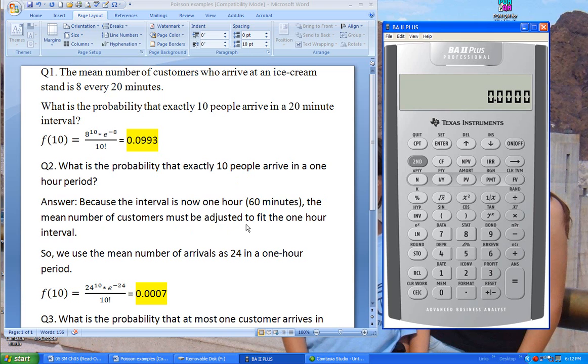So we use the mean number of arrivals to be 24 in a one hour period and then we go through the same calculation because we want to know exactly 10 people. So f of 10 is this calculation.